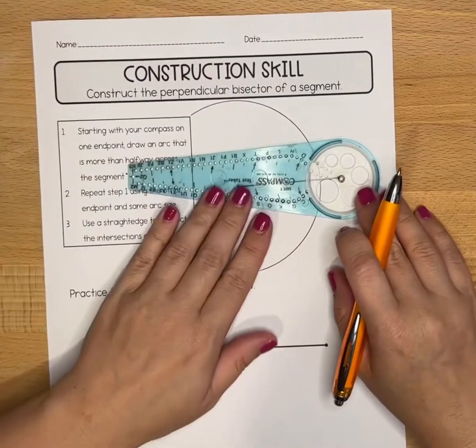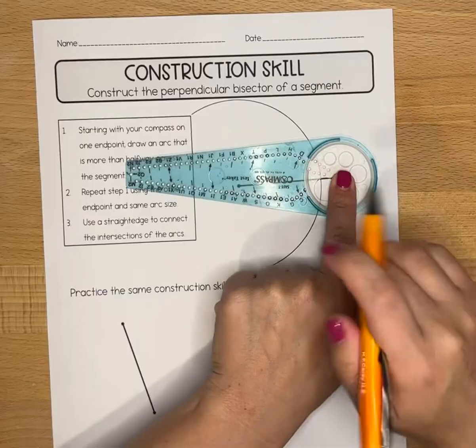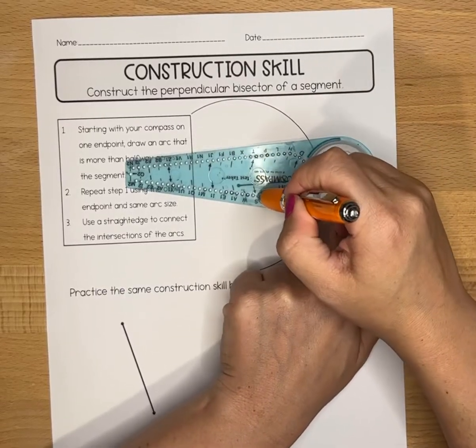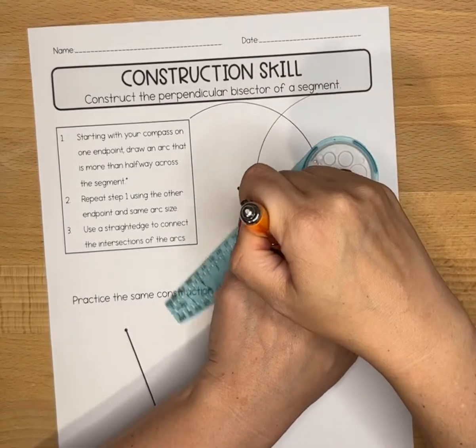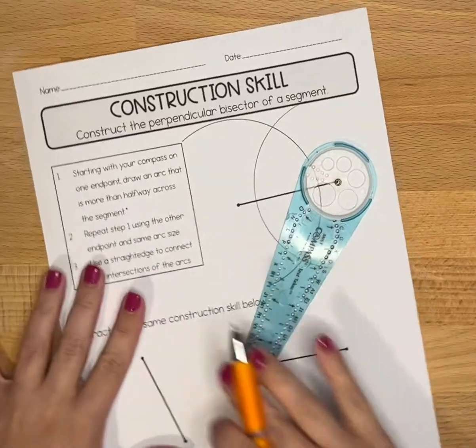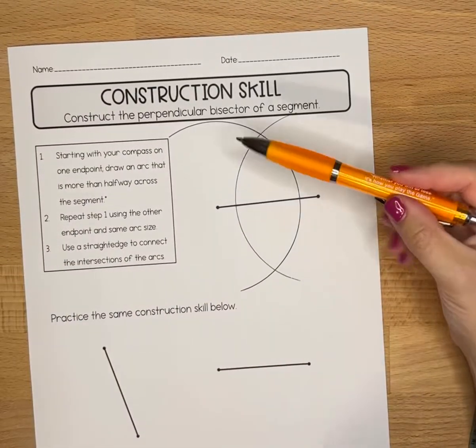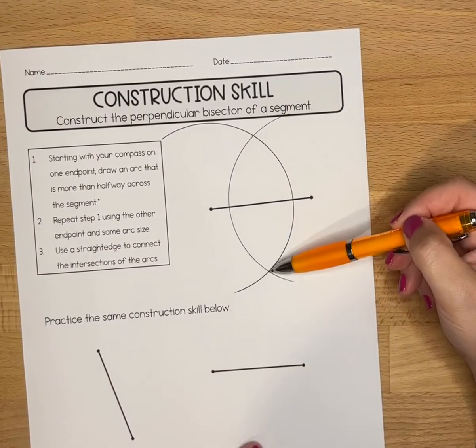Then I'm going to repeat step one using the other endpoint. The gold piece goes there. I'm going to use the same letter on my compass and make an arc the other way. The goal is for these two arcs to intersect.